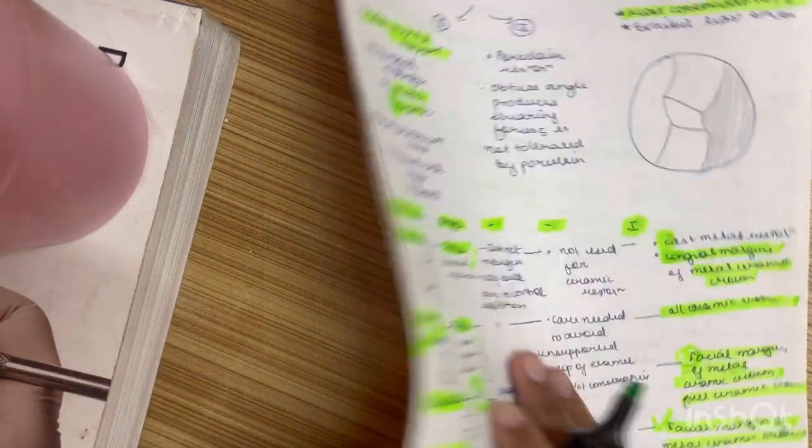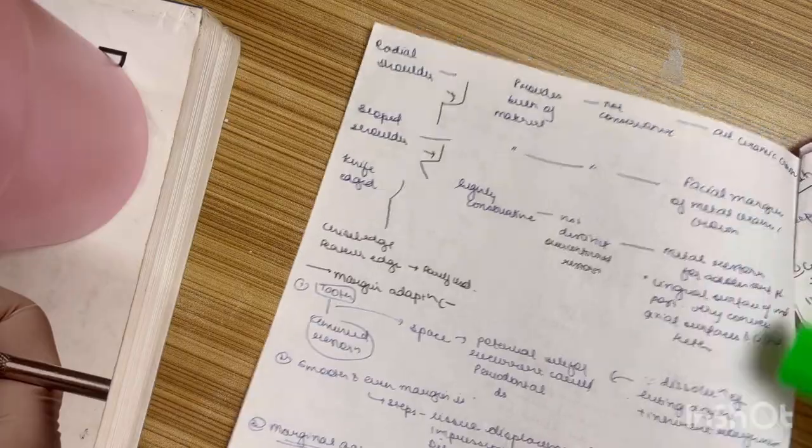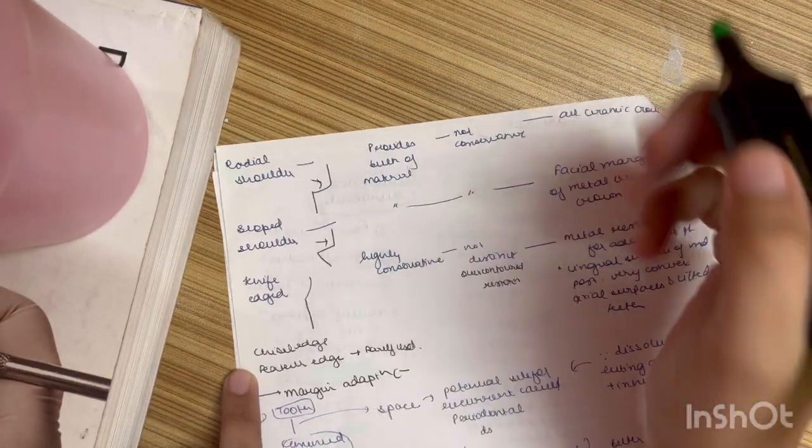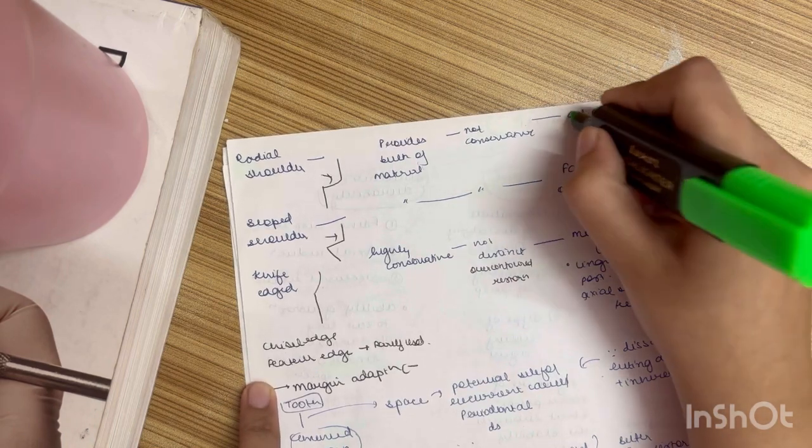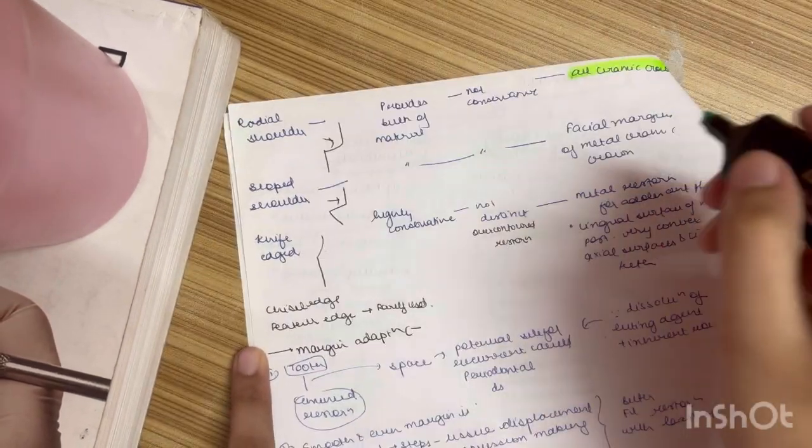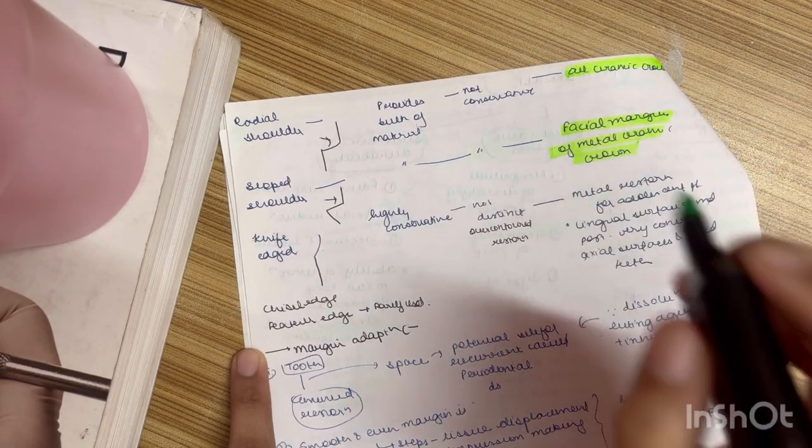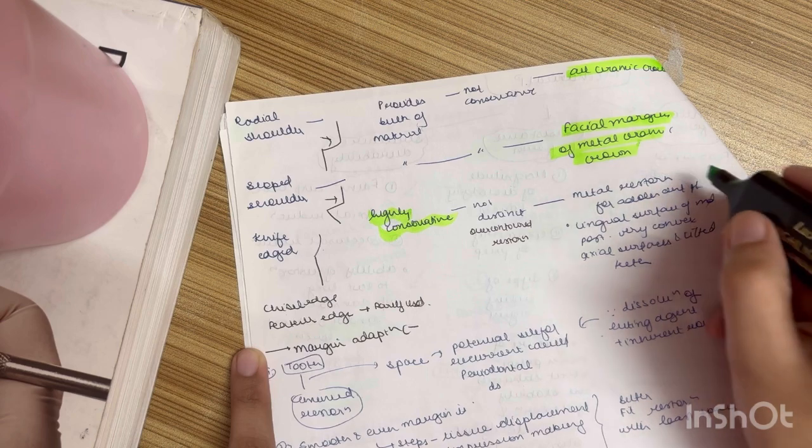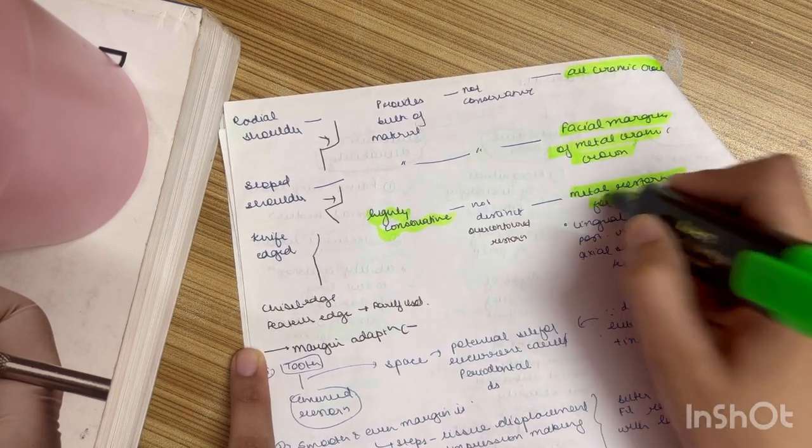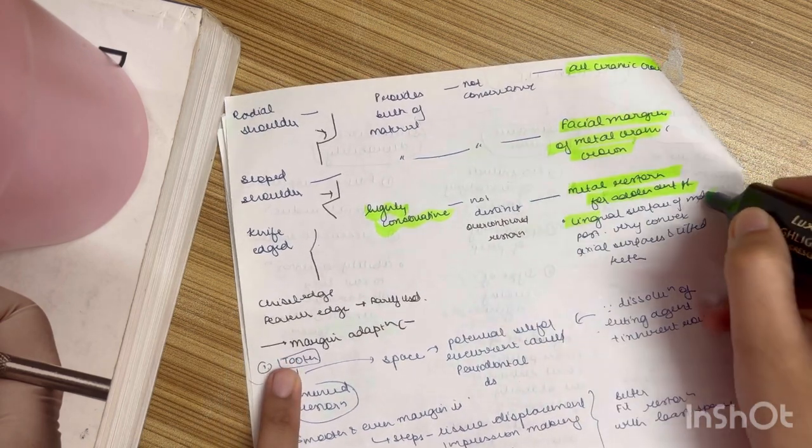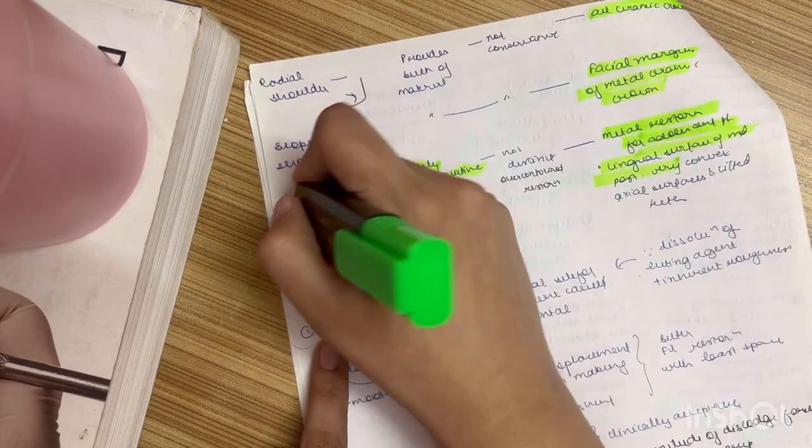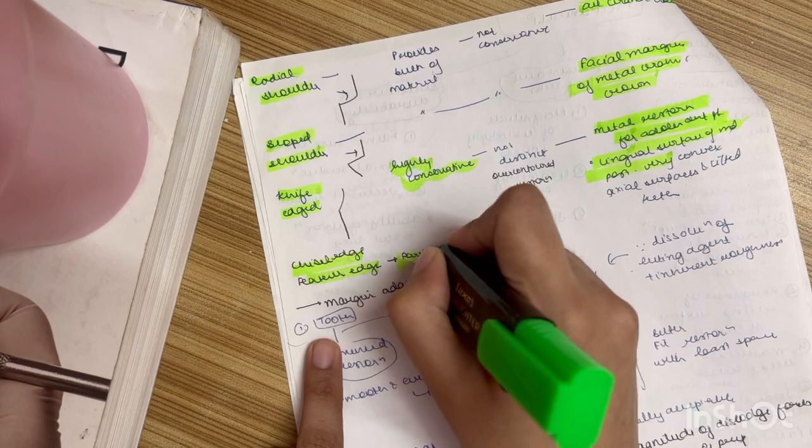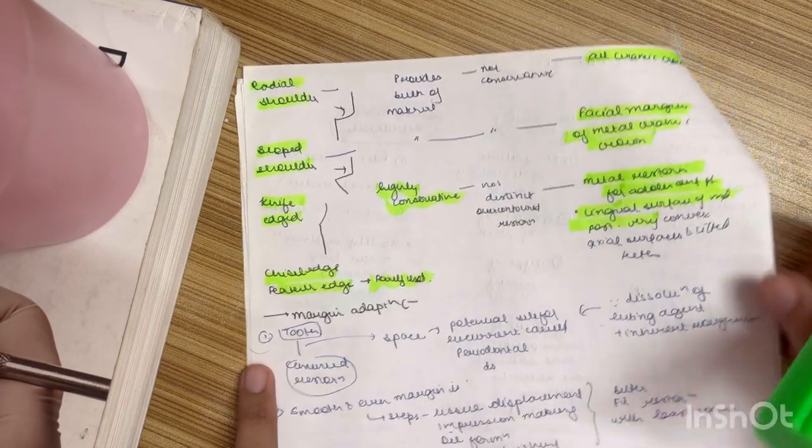Now there are two more that are left which is knife edge and radial shoulder, sloped shoulder. Radial shoulder is used in all ceramic. Sloped shoulder is used in facial margin of metal ceramic. Knife edge is highly conservative. Then metal restoration for adolescence and patient and lingual surface of mandibular posteriors. So this is it. Then there is one more which is chisel edge or feather edge. It is rarely used now. These are the finish lines.